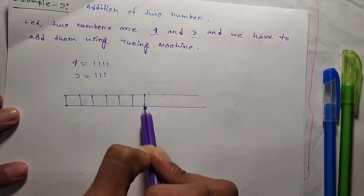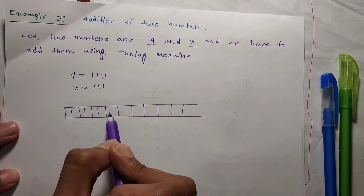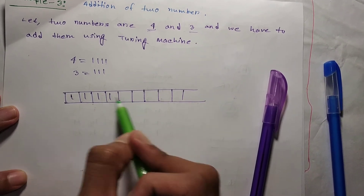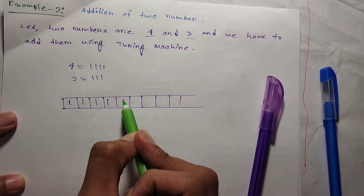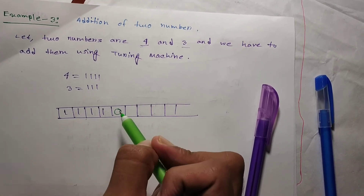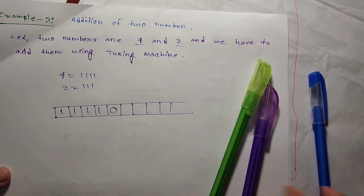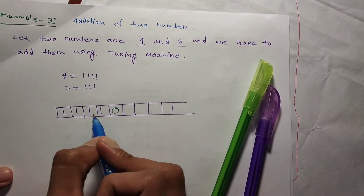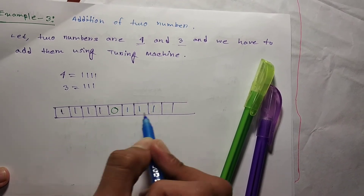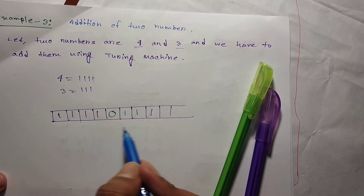We can easily write on the tape and use the tape. So we are adding 4 and 3. The third matter is added — 4 and 3 are added together, making the result of 4 and 3.